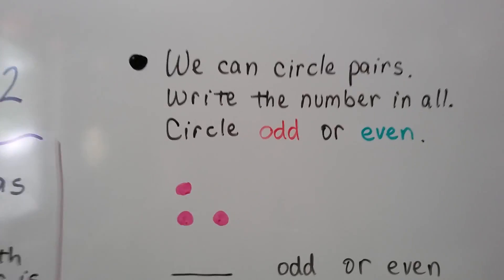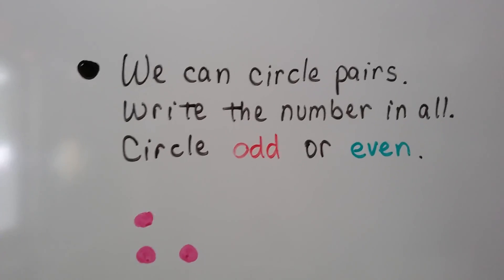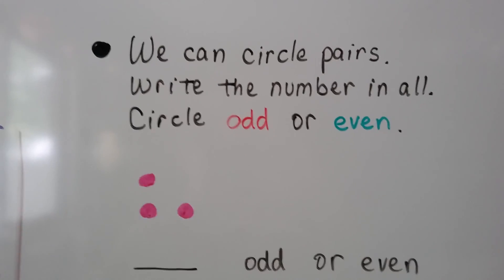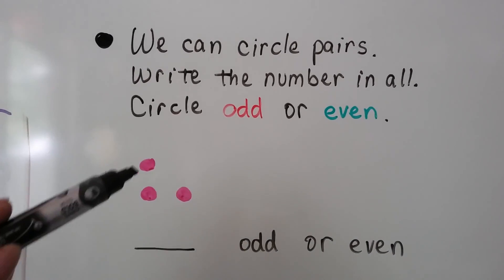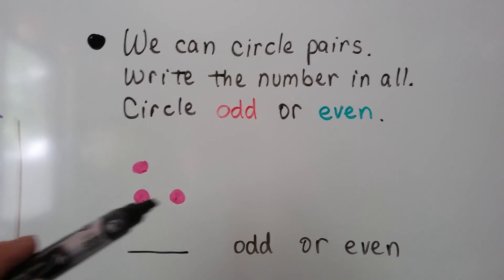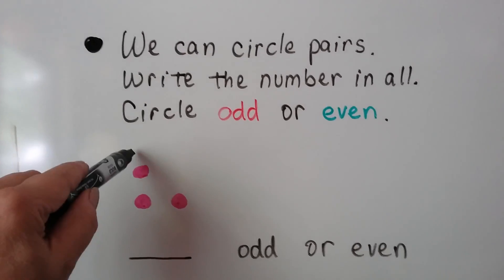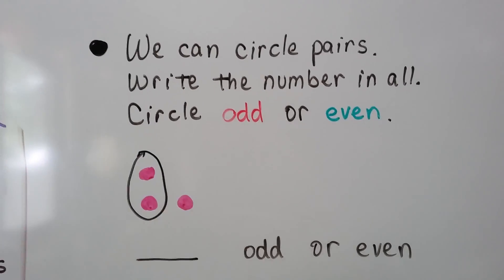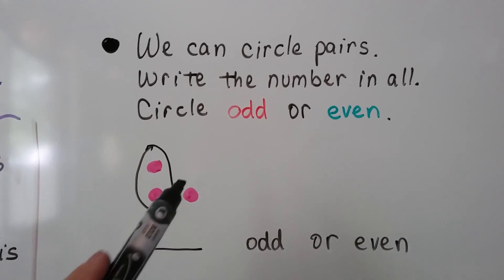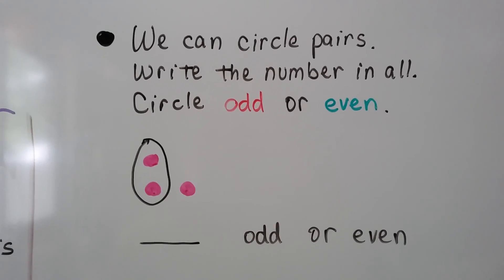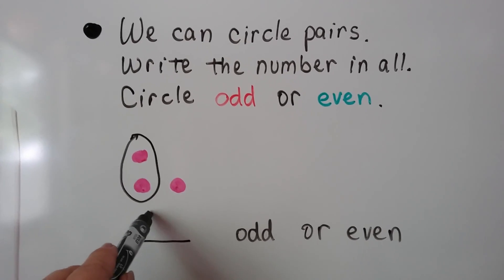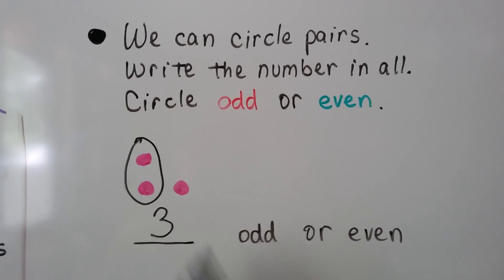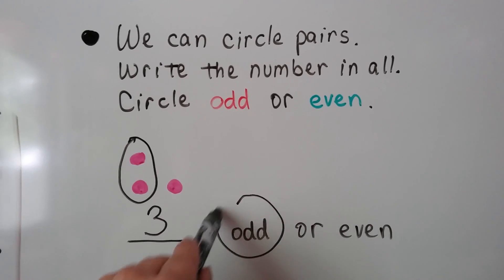We can circle pairs, write the number in all, and circle odd or even. Here we have three pink circles. We can make a pair, but we have one left over. There's three here, and because there's one left over, it's odd.